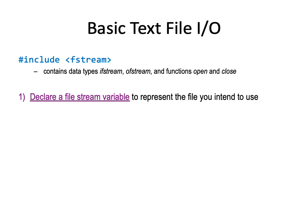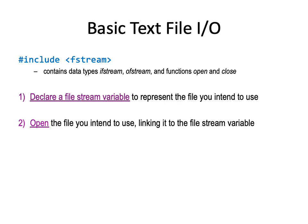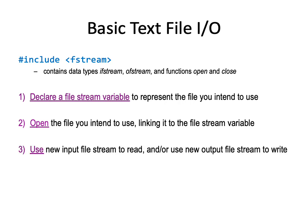The first thing to do in your actual program is to declare a file stream variable to represent the stream for the file you want to use. Once you've done that, you can open the file, which will link it to the stream variable so you can access the actual physical file on your computer. Once it's open, you can use the input stream to read from the file, or you can use the output file stream to write to the file, depending on what kind of file stream you are using. Finally, you want to close the file when you're done with it.